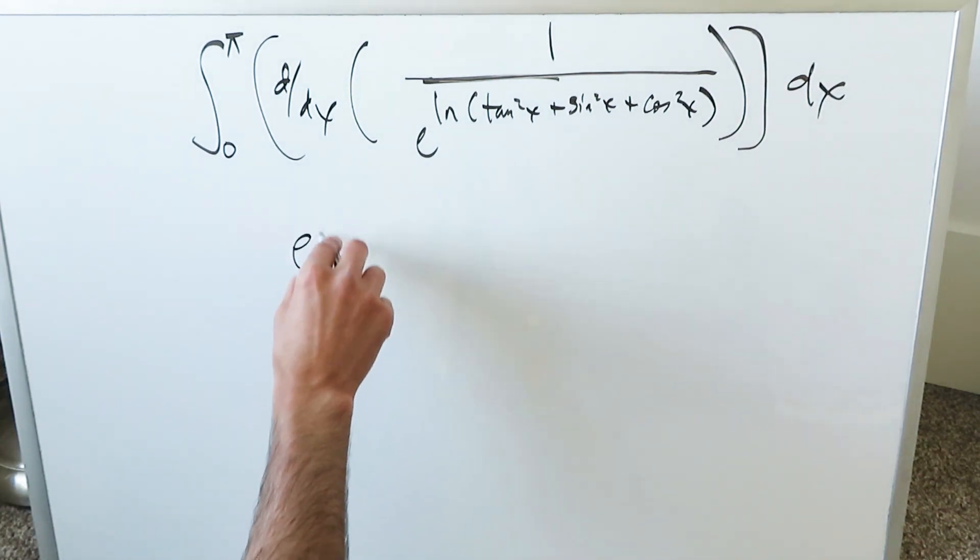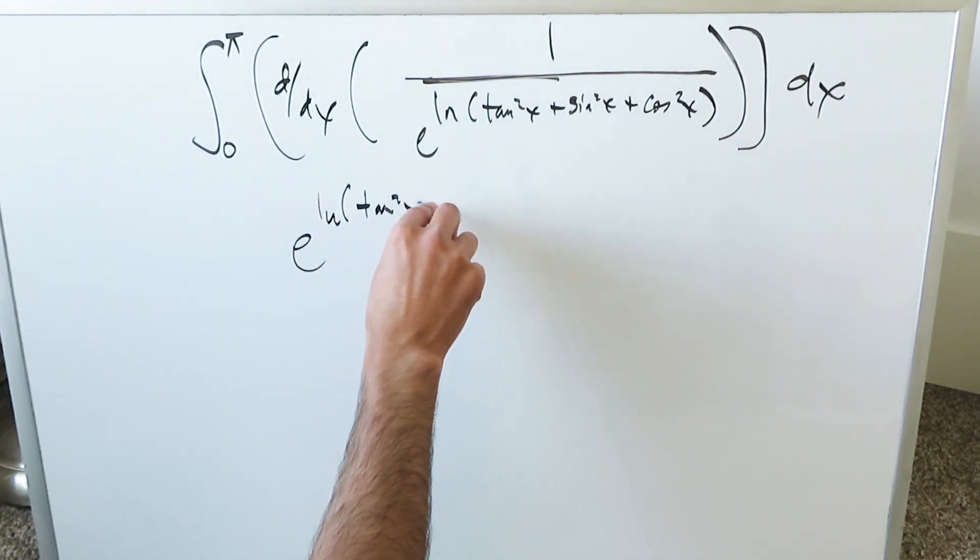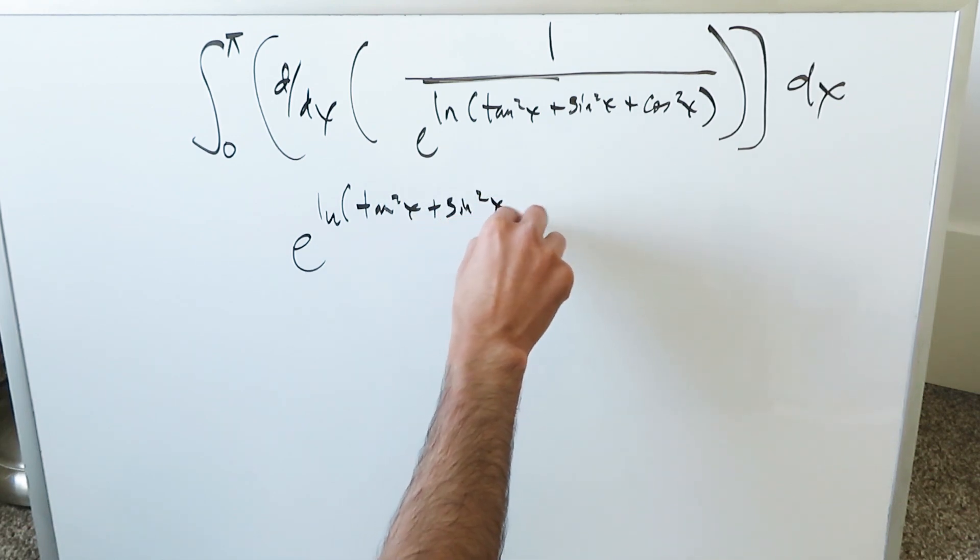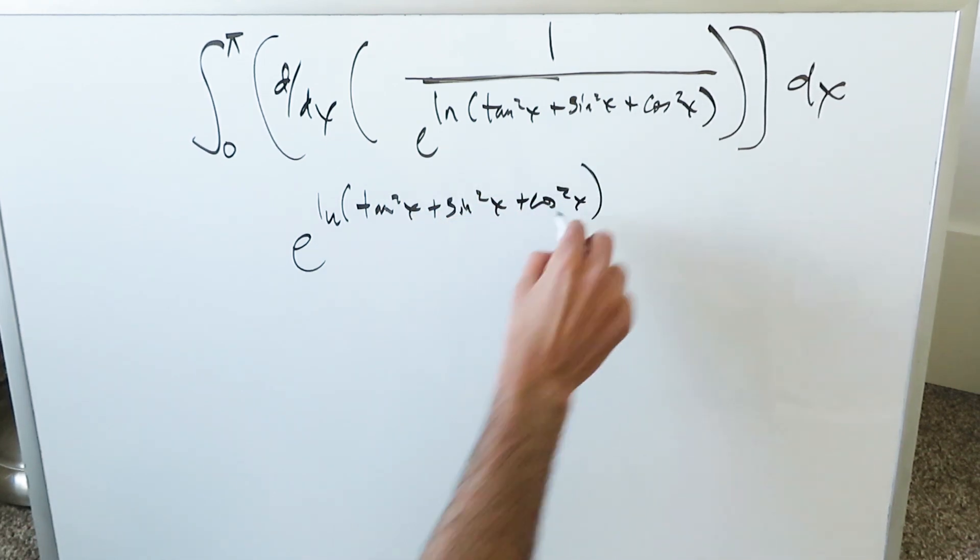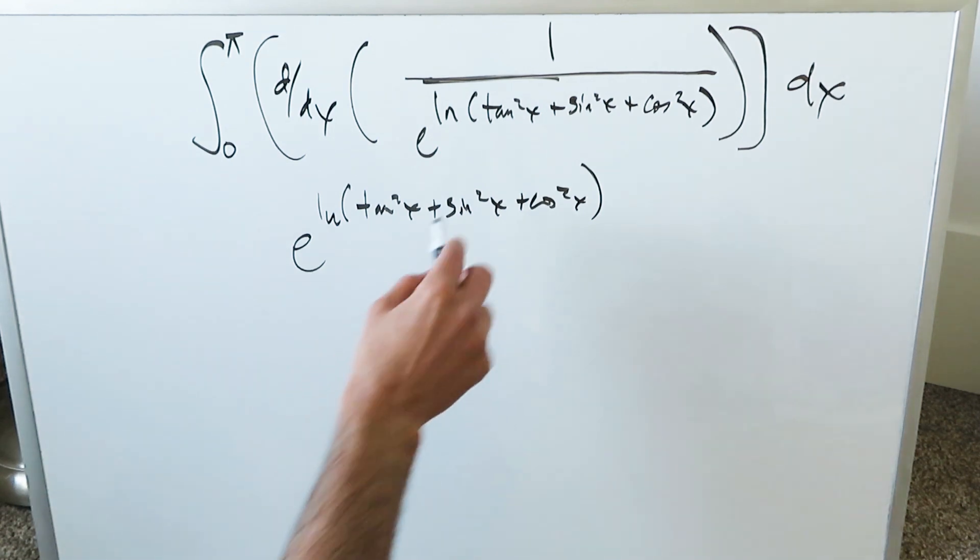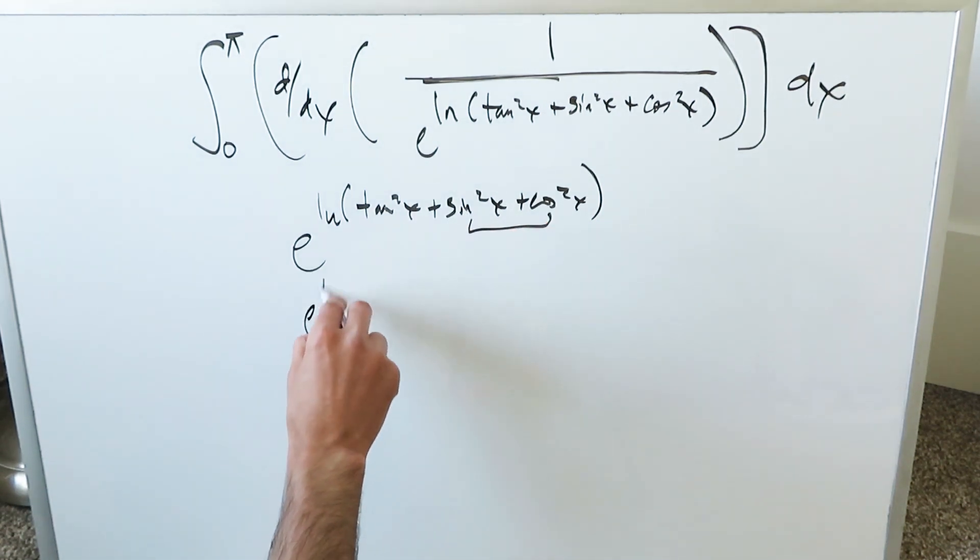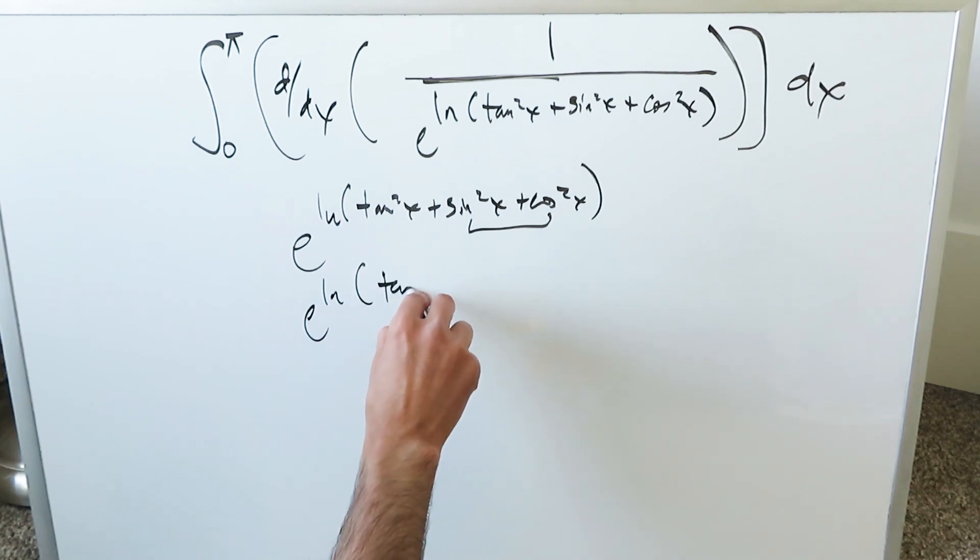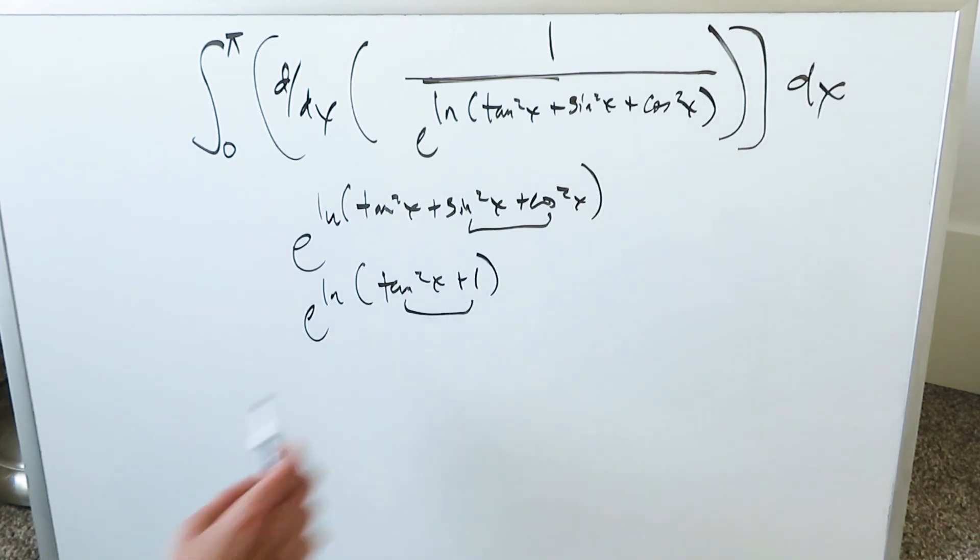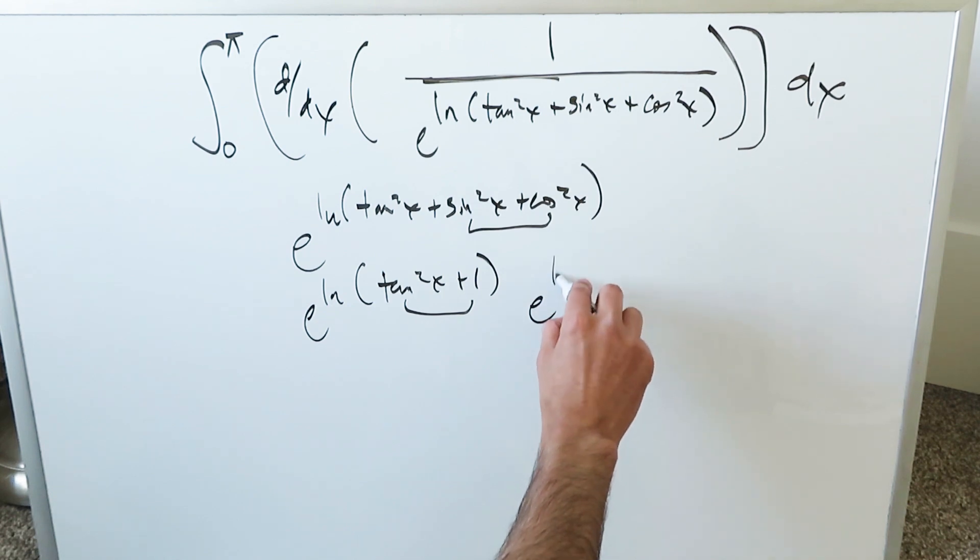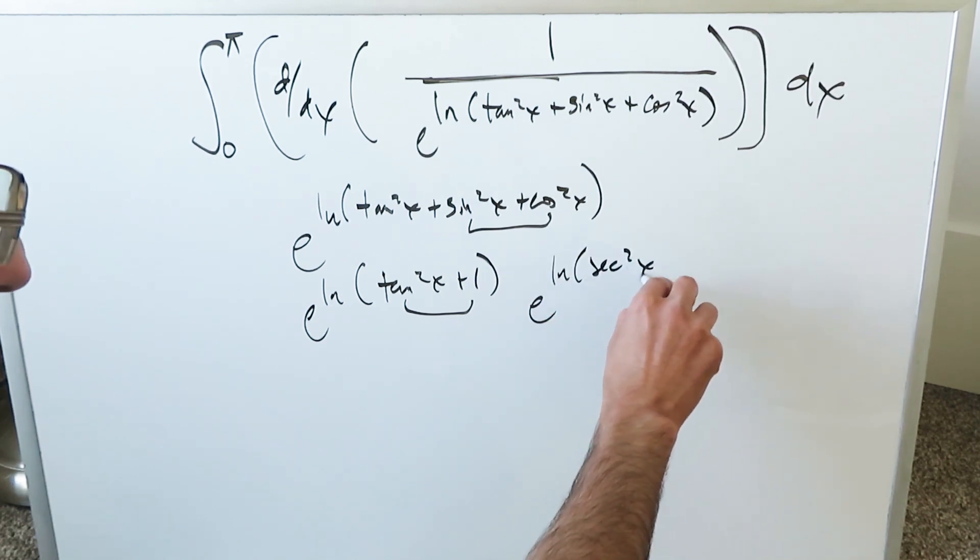We're looking here at e exponent natural log tan square x plus sine square x plus cosine square x. Your first trigonometric identity is sine square x plus cosine square x is equal to 1. You're looking at e exponent natural log tan square x plus 1. Your next trigonometric identity: this is equal to secant square x. You have e exponent natural log secant square x.